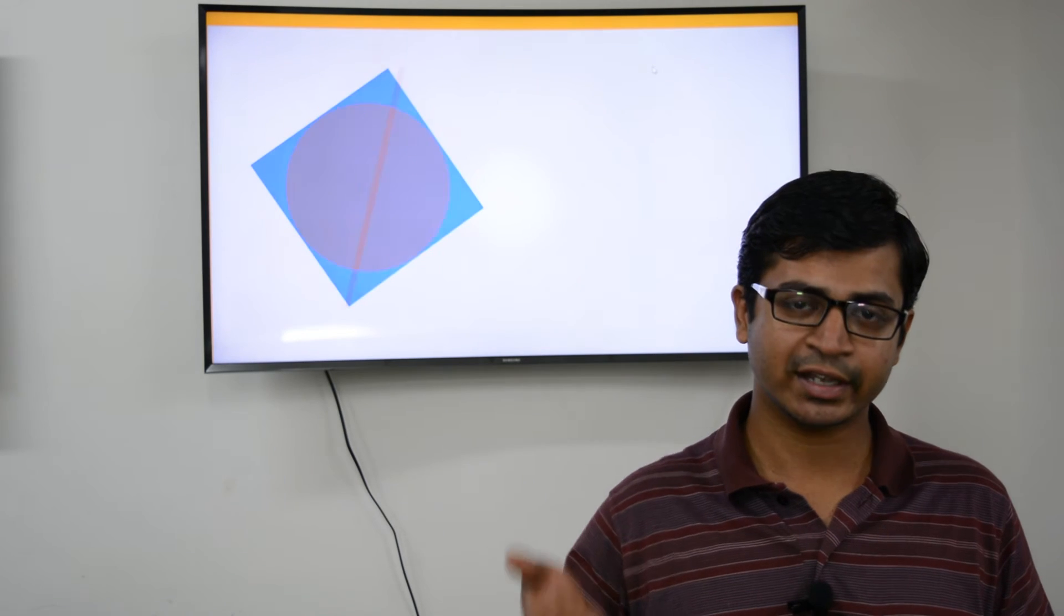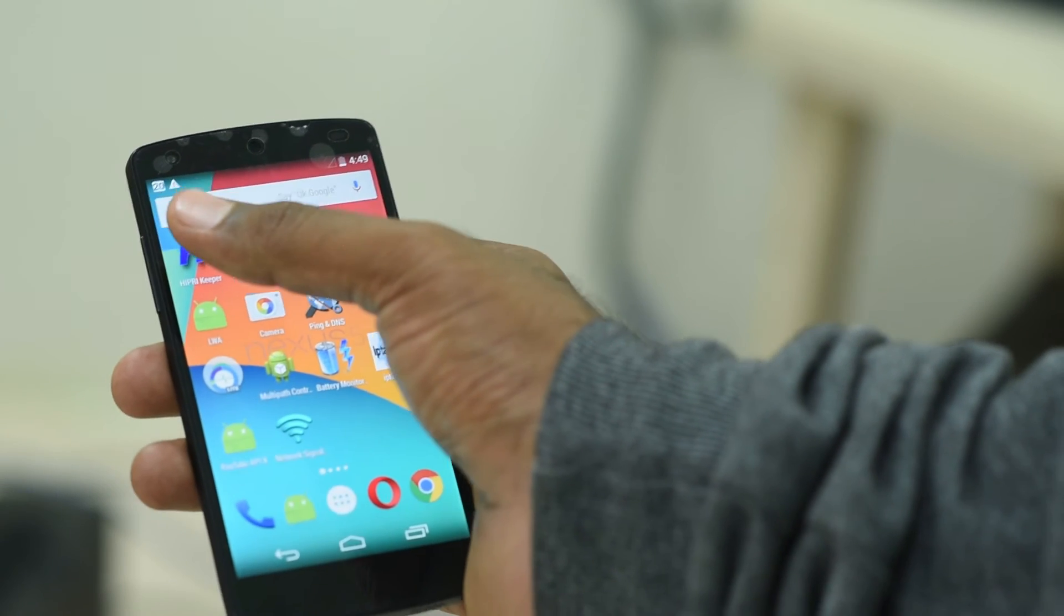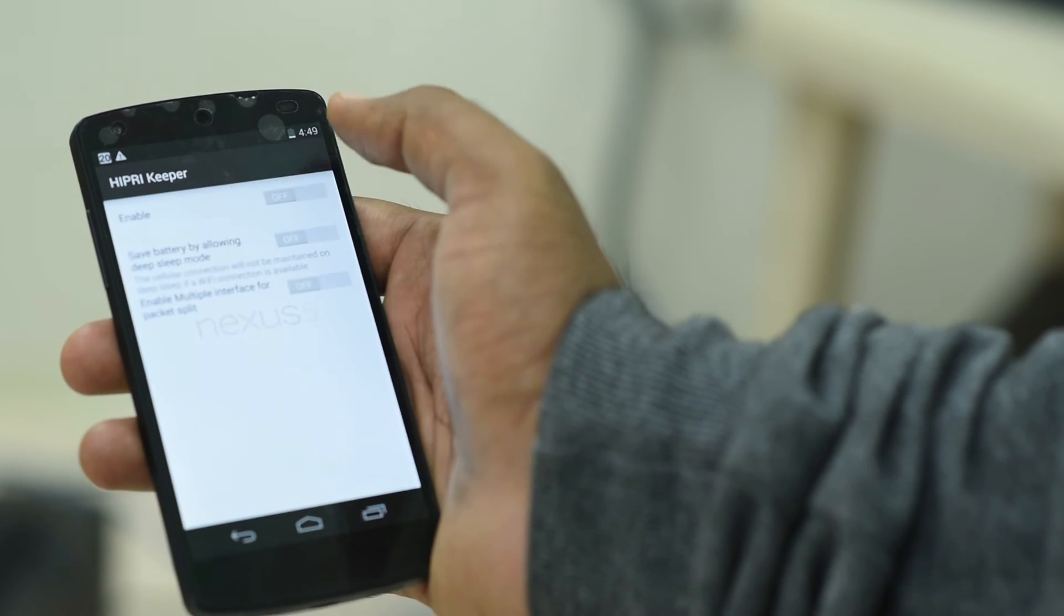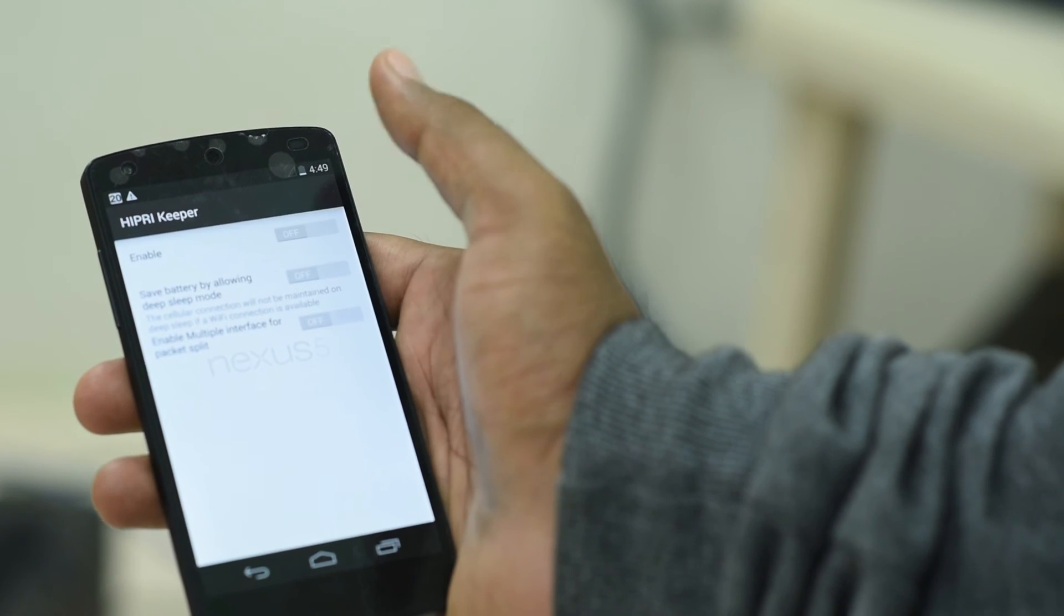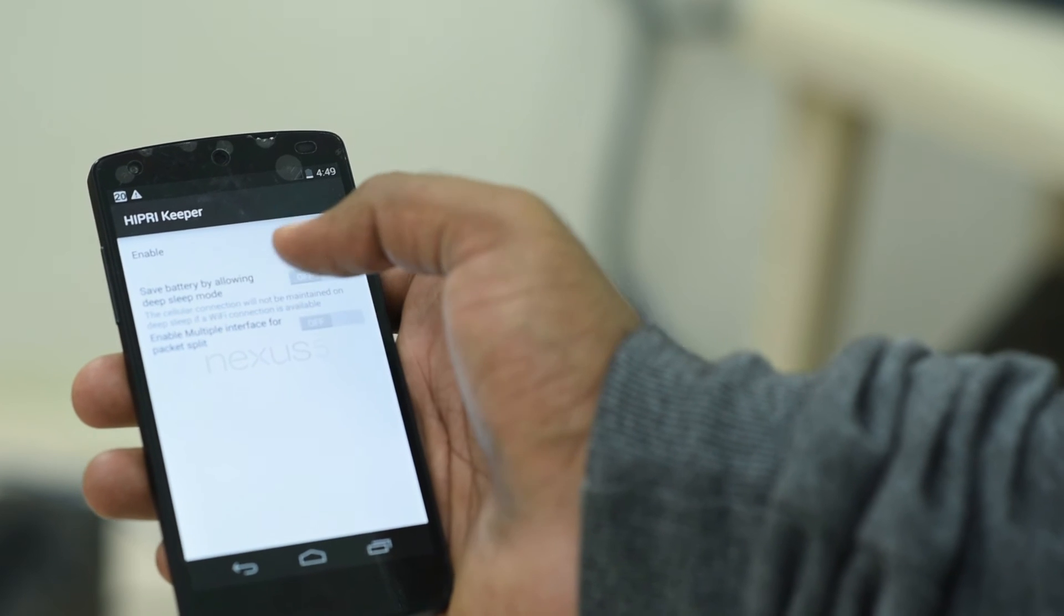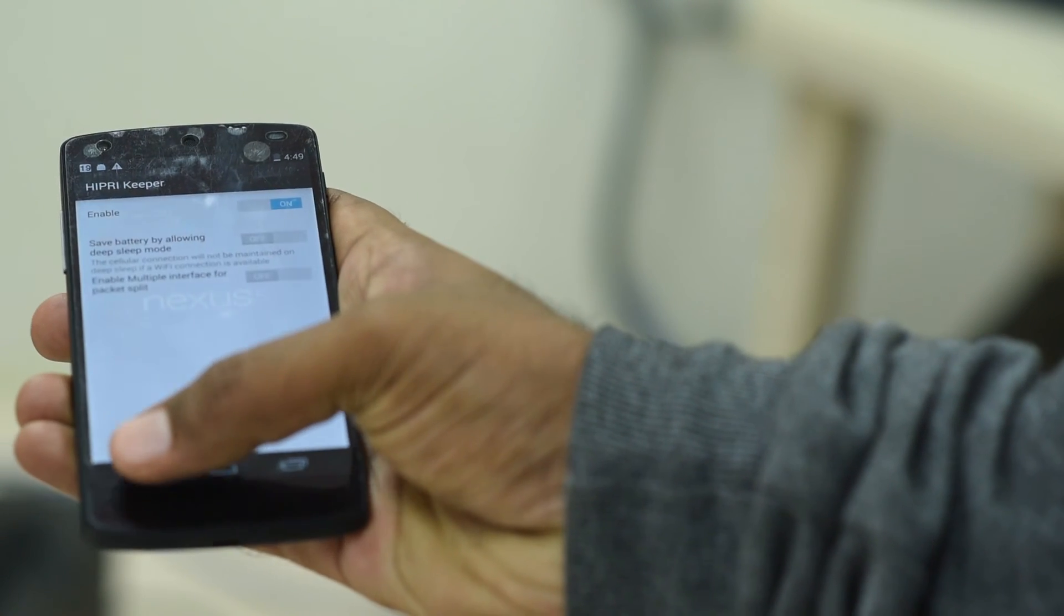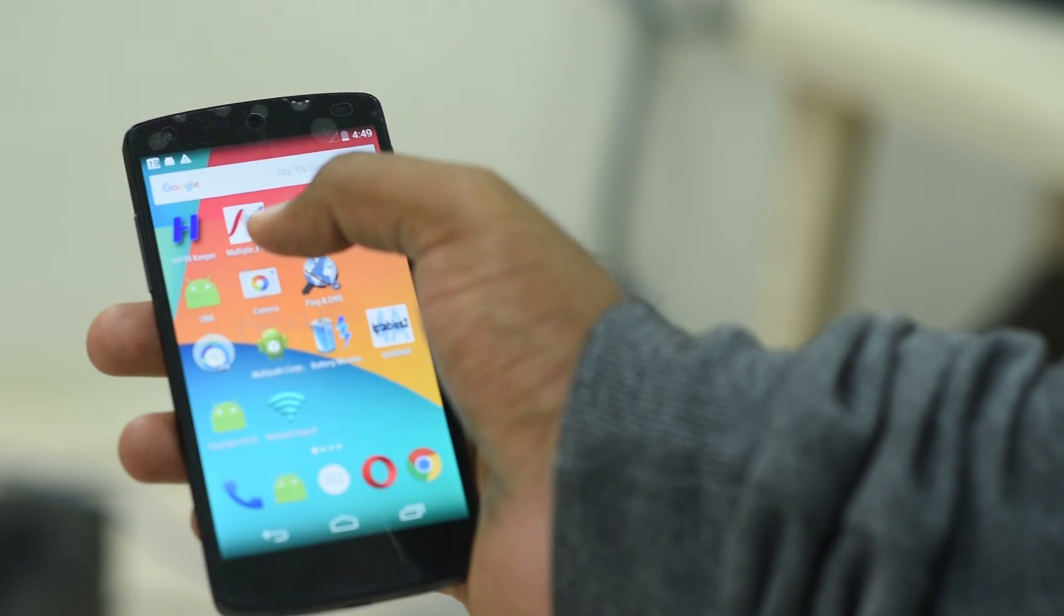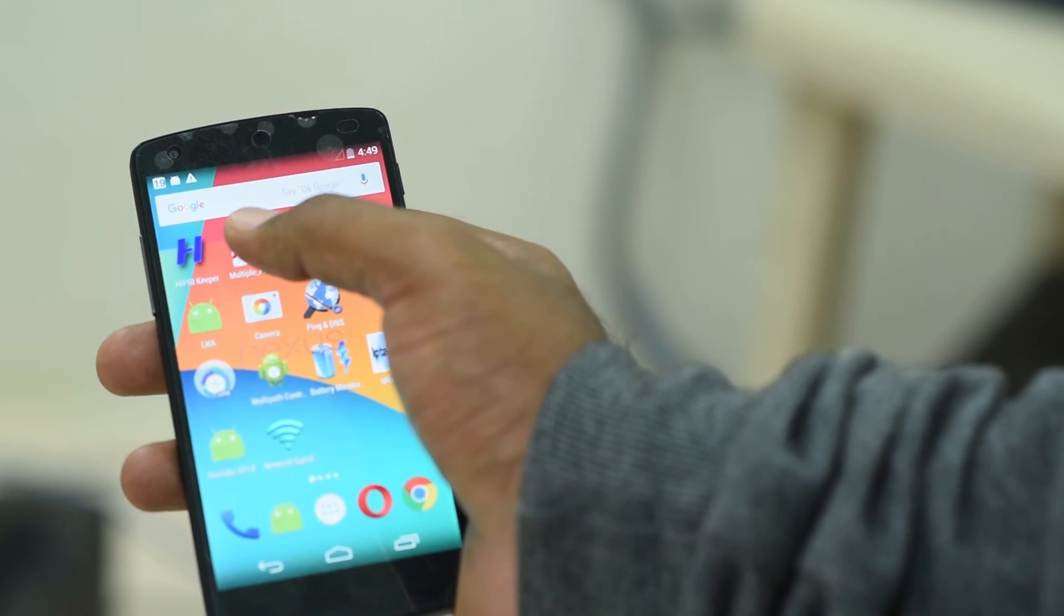We have used an Android app called Wi-Fi Priority Keeper which we tweaked—it's open source—to enable both interfaces simultaneously. I'm just enabling both interfaces simultaneously at this particular point, and then I have written my own app which uses both interfaces to download the same file.